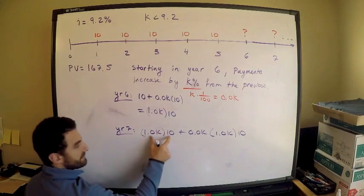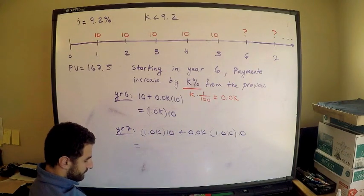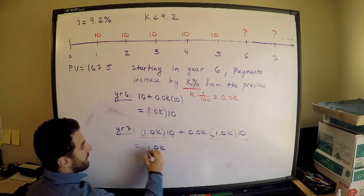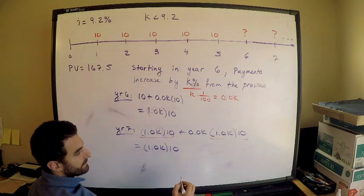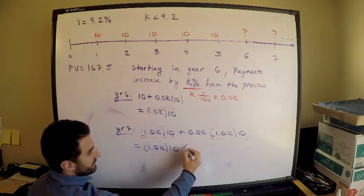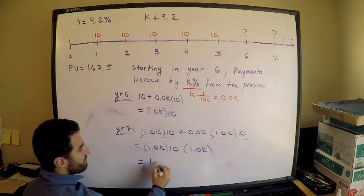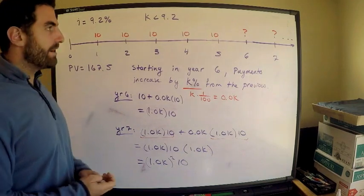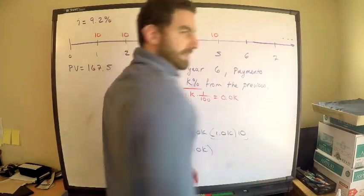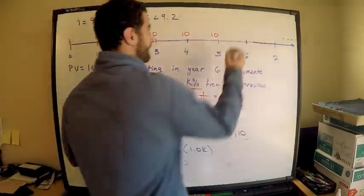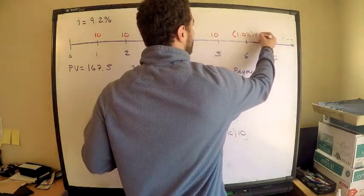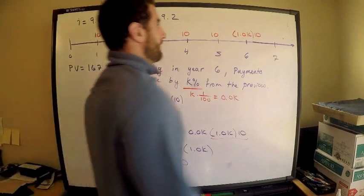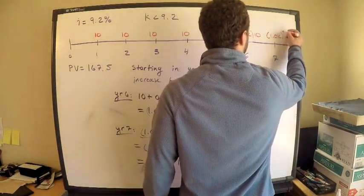Factor out the greatest common factor, which is 1.0K times 10. If I factor that out, I have 1 plus 1.0K again. So this is 1.0K squared times 10. Hopefully you see the pattern now. For year six, I have 1.0K times 10. For year seven, I have 1.0K squared times 10.